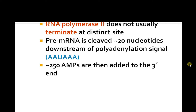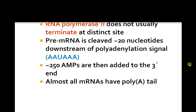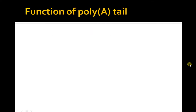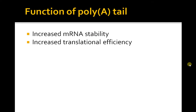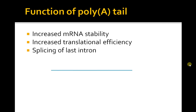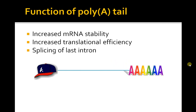Approximately 200 AMPs are then added to the 3' end. Almost all mRNAs have a poly-A tail. The functions of the poly-A tail include increasing mRNA stability, increasing translation efficiency, and assisting in splicing and loss of introns.